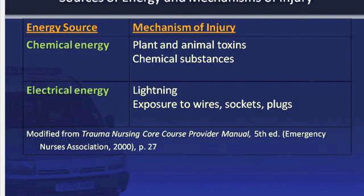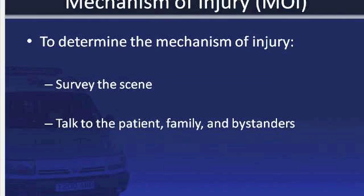You may also encounter chemical energy, which may include plant or animal toxins or chemical substances, and electrical energy, which includes lightning, exposure to wires, sockets, or plugs. Survey the scene and talk to the patient, family, and bystanders to determine what the mechanism of injury was.